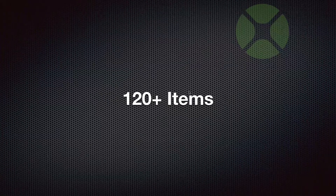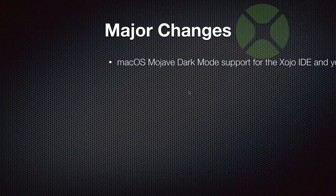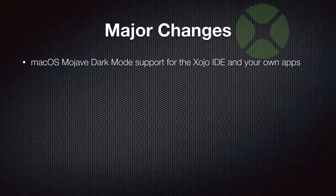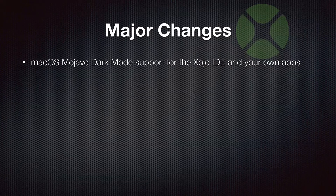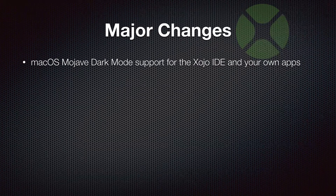Next in line was 2018 Release 3, out on October 23rd, containing over 120 items. Its major change was a bit of a surprise feature: Mojave's dark mode support. Apple announced this at their WWDC conference over the summer. We thought it looked pretty cool and jumped on adding support for it since developers often like to work in dark mode.